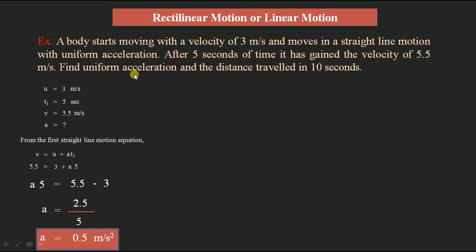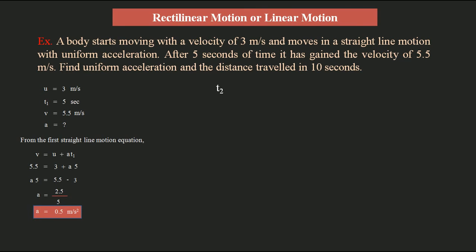Now we need to find the distance traveled in 10 seconds. We use the second standard equation for rectilinear motion: s = ut + ½at². Here t2 = 10 seconds, initial velocity u = 3 m/s, and acceleration a = 0.5 m/s².